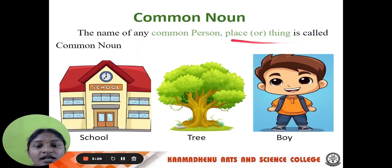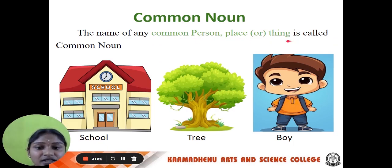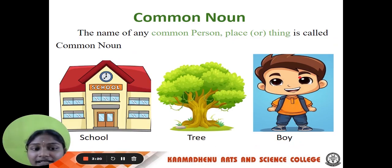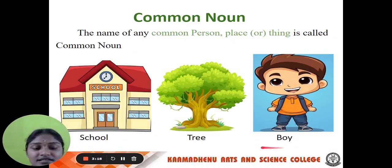Now let us see common noun. A name of any common person, place or thing is called a common noun. For example, school, tree, and boy. If I give a name to a boy, it becomes a proper noun. Without a specific name, it is called a common noun — simply 'boy.'